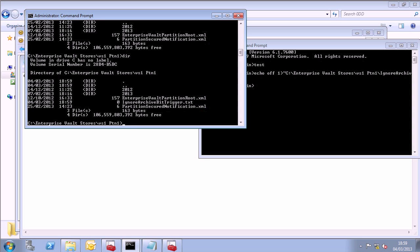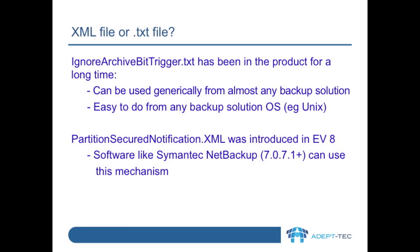Both this trigger file and the XML file, if used, have to be the exact names given — no other names can be used. ignore-archive-bit-trigger.txt has been in the product for a very long time and it can be used generically from almost any backup solution. Right at the end of the backup, the file needs to be created. It's easy to do this from any backup solution or operating system, for example, a UNIX server. partition-secured-notification.xml was introduced in Enterprise Vault 8, and software like Symantec NetBackup v7.0.7.1 utilized this XML file mechanism.